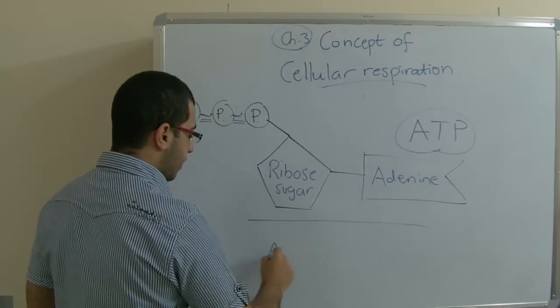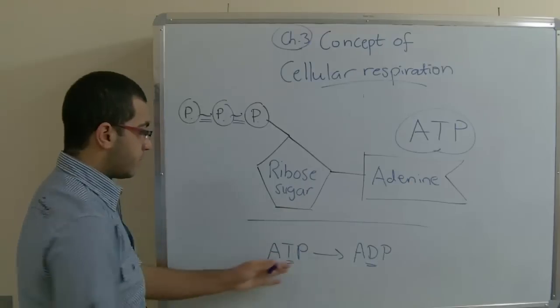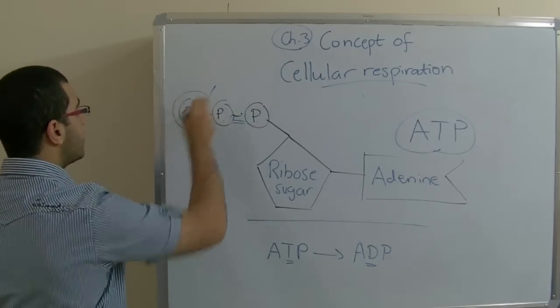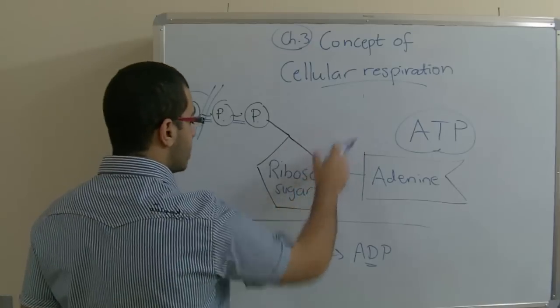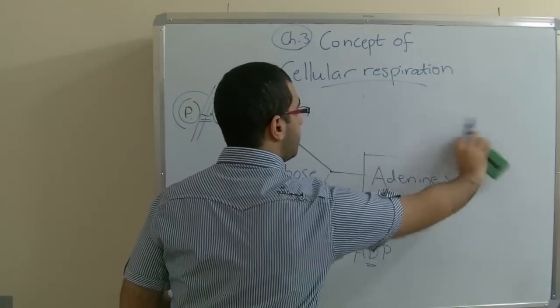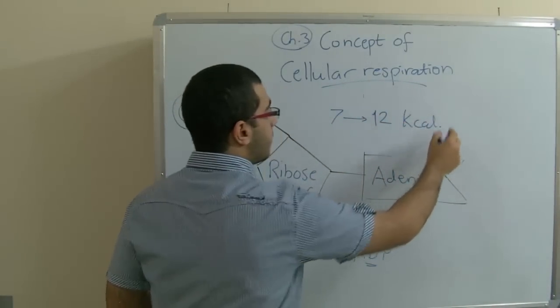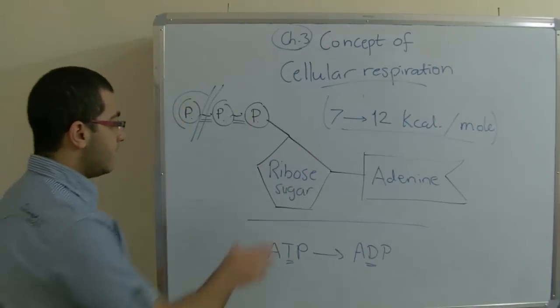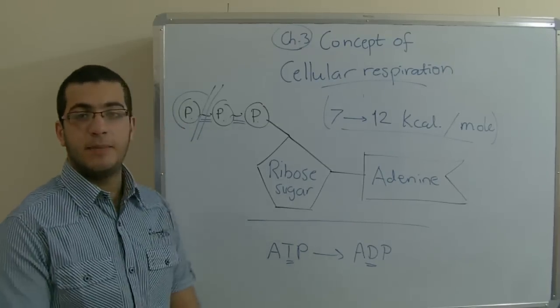So this ATP changes from ATP to ADP. This difference here, the T is for tri, D is di. So adenosine diphosphate. It means that it loses a phosphate group. So only one bond is broken down. And when one molecule ATP changes to ADP, an amount of energy is produced. This amount of energy is from 7 to 12 kilocalories per mole. This is the amount of energy produced when an ATP molecule loses a group of phosphate that it contains to change into ADP.